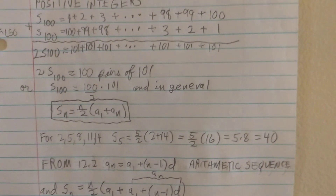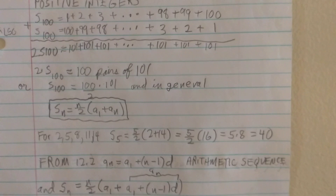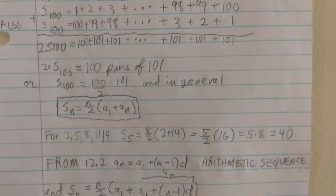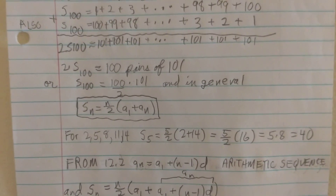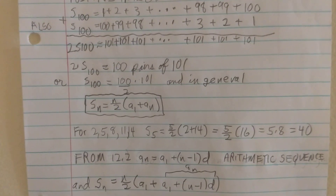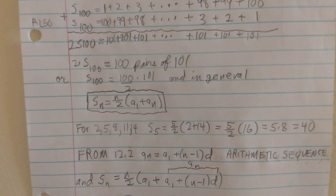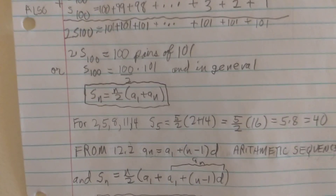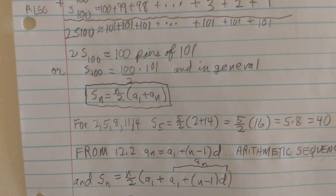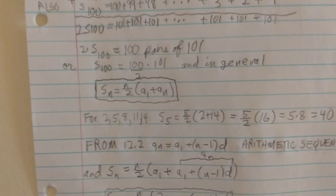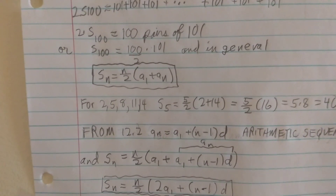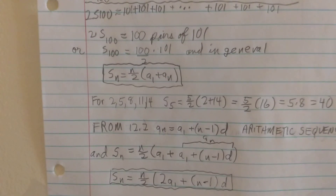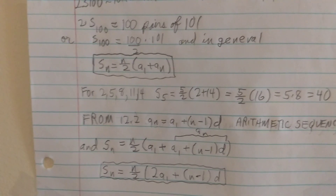So what we really have is two times S sub 100 equals 100 pairs of 101. Dividing out the two, I can see I have 100 over 2 times 101, so there are 50 pairs of 101. In general, S sub n — the sum of the first n sequence terms — is n over 2 times the first term plus the last term, because they're going to add up to a constant.